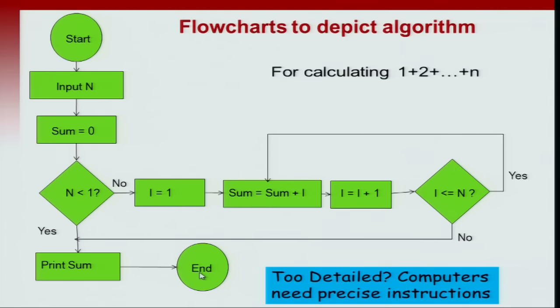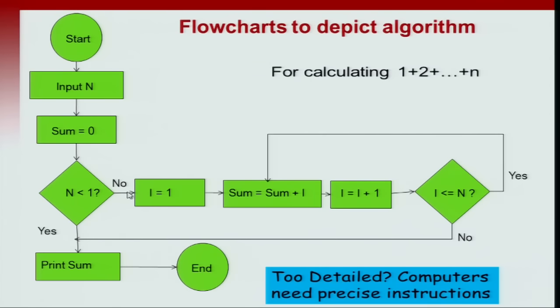When you reach i equal to n, you come out of the program, print the sum and end the program. This is a very simple flow chart. Initially, if n is less than 1 you have nothing to do. If n is greater than 1, you start a counter from i equal to 1 to n and add the numbers one by one until you hit the n-th number.